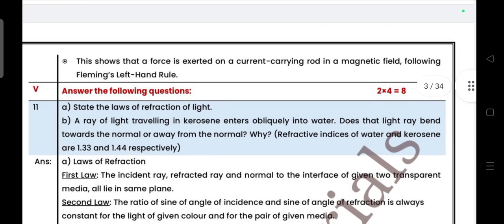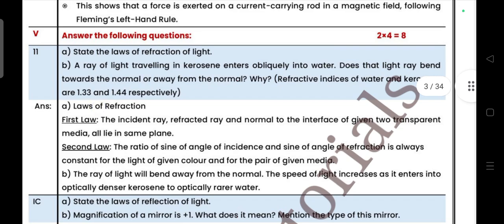Next, main answer the following question, four marks. Two questions will be there. State law of refraction of light. A ray of light traveling in kerosene enters obliquely into water. What does the light ray bend towards the normal or away from the normal? Why? Refractive indices of water and kerosene are 1.33 and 1.44.